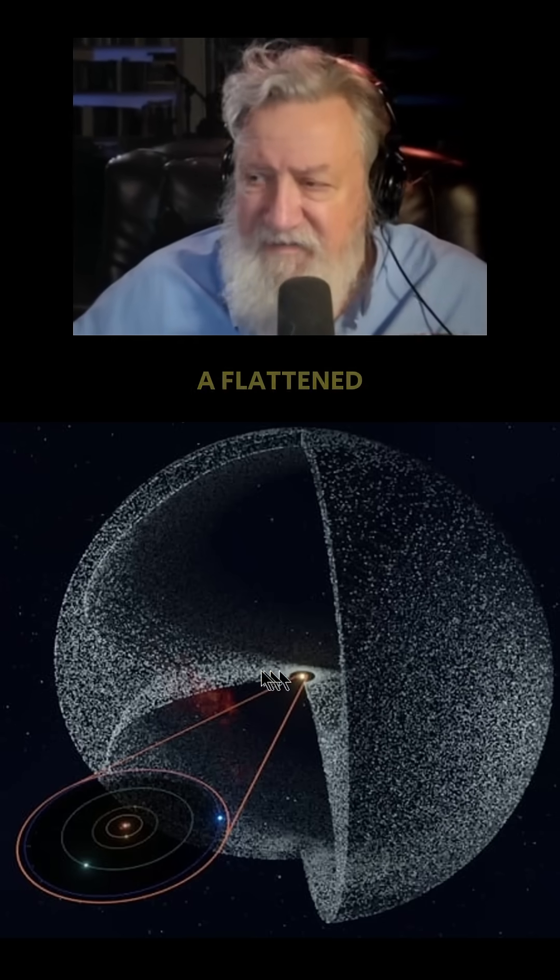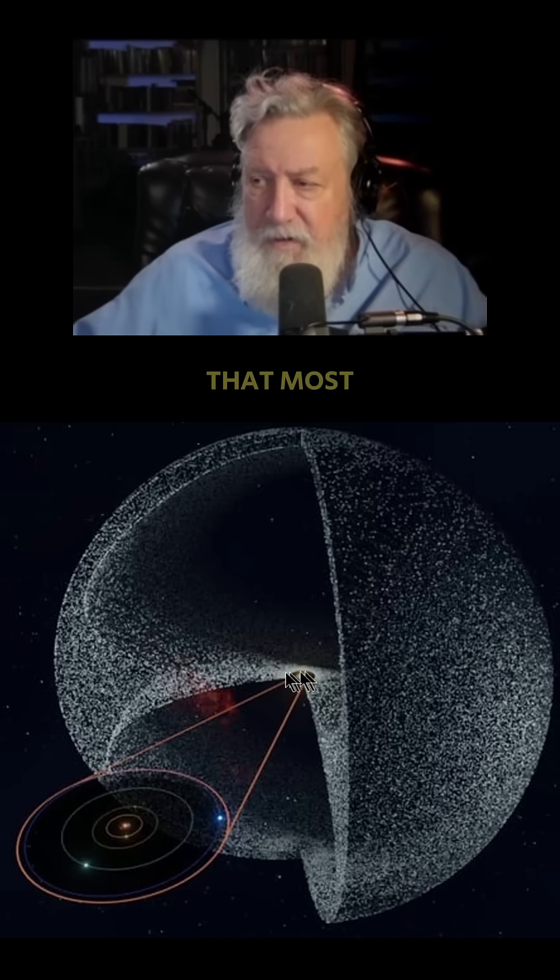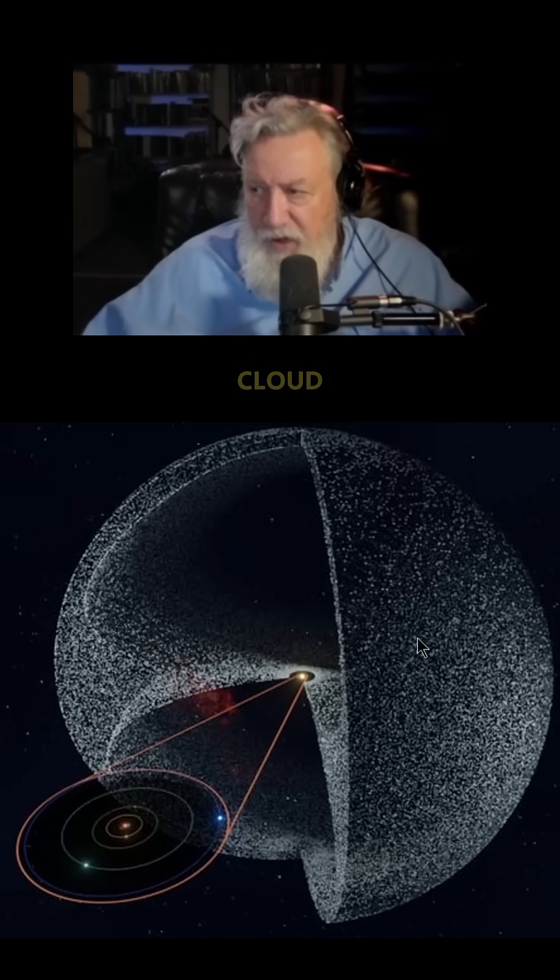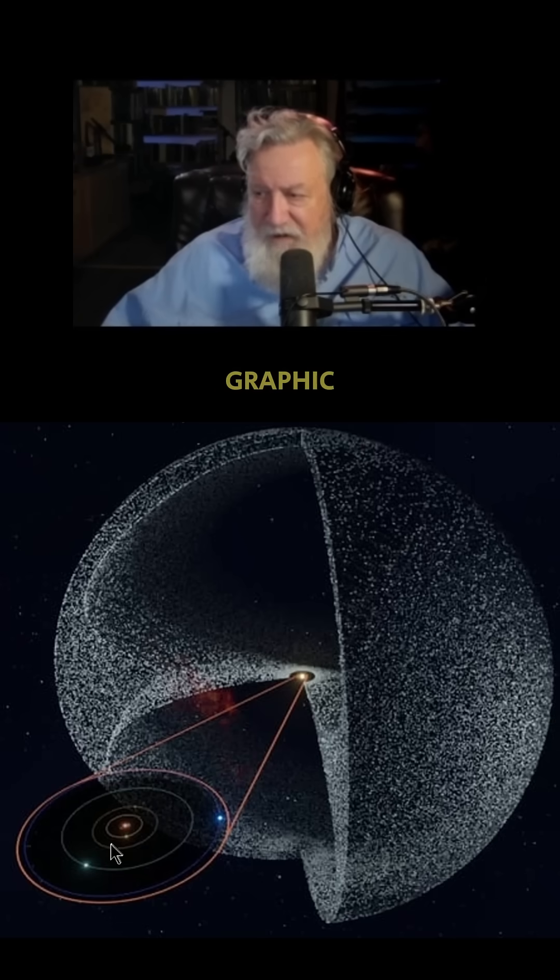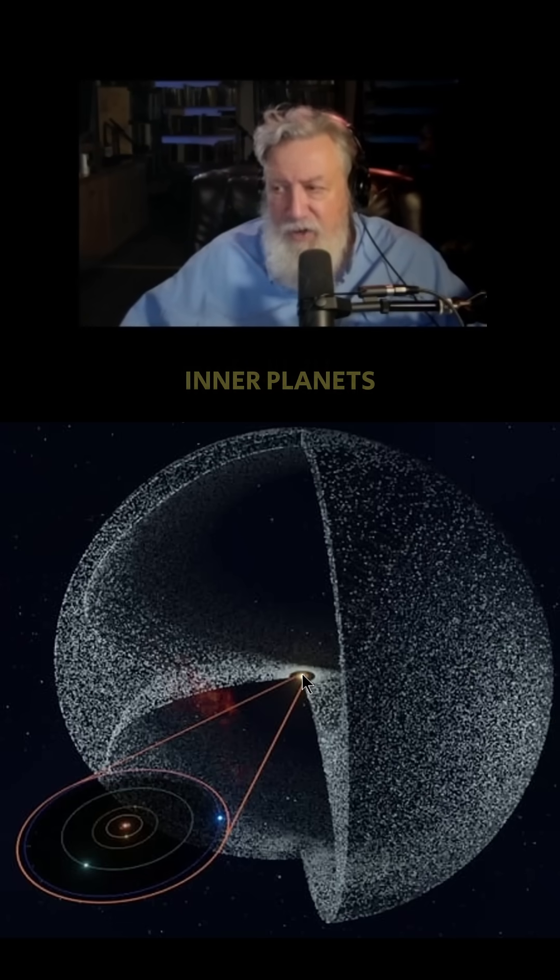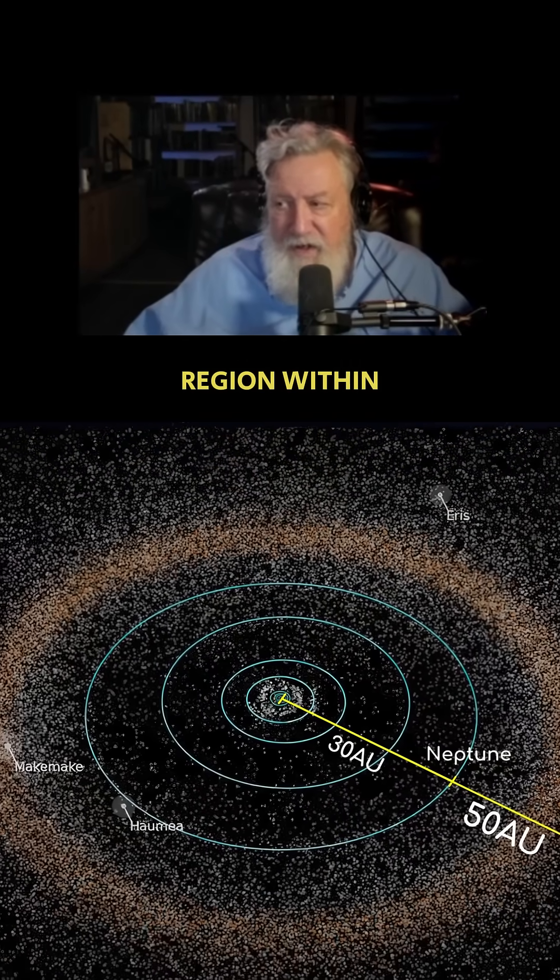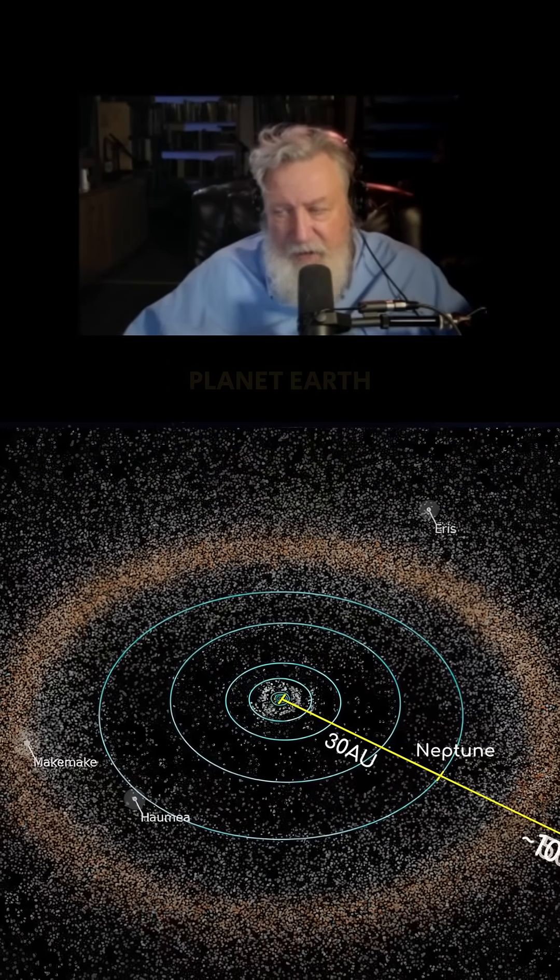Then you have the Kuiper disk as a flattened area that most likely just grades into the spherical cloud. And you can see with this graphic here, this is showing the area, the region of the inner planets. And that, of course, is the region within which we reside on planet Earth.